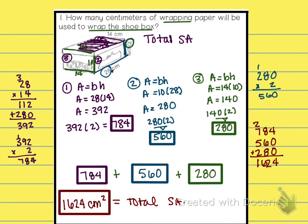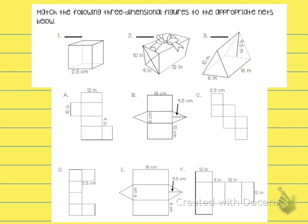Okay, so you should have gotten 784 centimeters squared for the top and bottom, 560 centimeters squared for the long sides, and then 280 centimeters squared for the two short sides for a total of 1,624 centimeters squared for the total surface area. Okay, so moving on to this one.